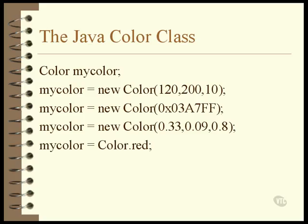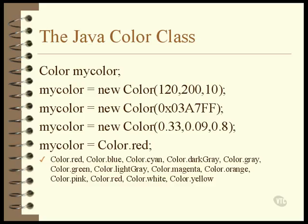For convenience, some of the more common color objects already exist and are there for you to use. These predefined colors are all defined inside the color class, already instantiated as objects and ready to be stored in your graphics object or whatever else you decide to use them for. Here are the names of the predefined colors — there are a total of 12, including black and white as well as the three primary colors.